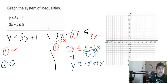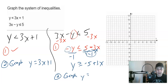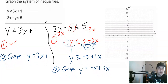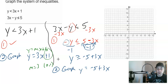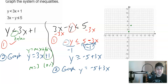When solving the second inequality for y, we divide both sides by −1 to isolate y. When you divide by a negative on both sides of an inequality, you must flip the symbol. This rule is always in effect for inequalities. After dividing, we get y ≥ −5 + 3x.